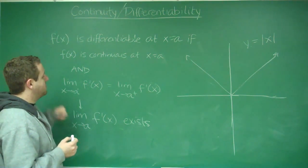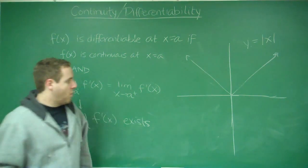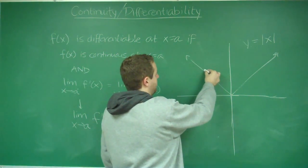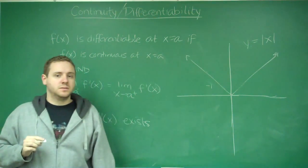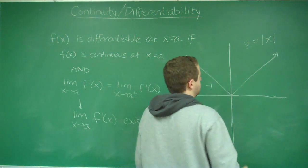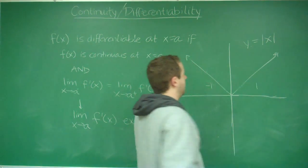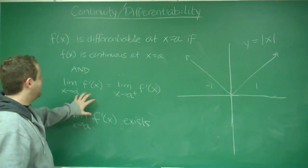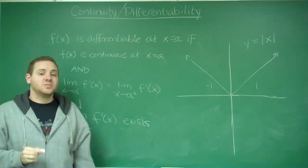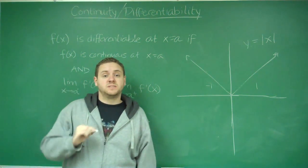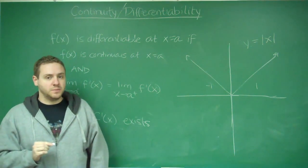Is the limit as you take the slopes from the left and the right the same? Well, as we approach 0 from the left, the slope of this graph is a static negative 1. As we approach 0 from the right on this graph, the slope is a static 1. So this would be negative 1 for this graph, and this would be 1. Those things are not equal, and therefore this function is not differentiable at x equals 0.